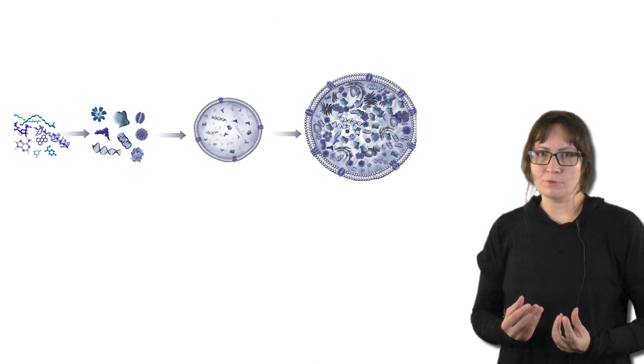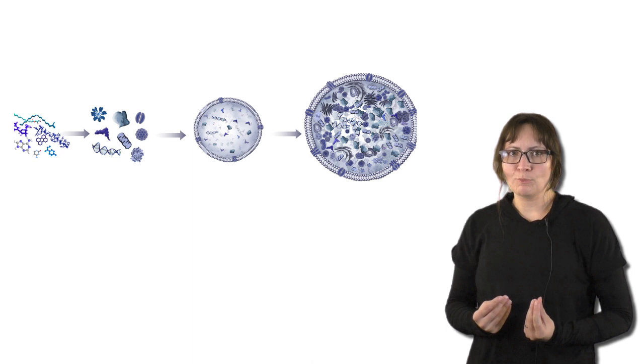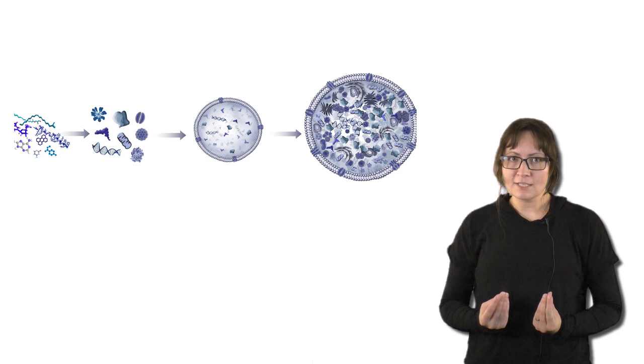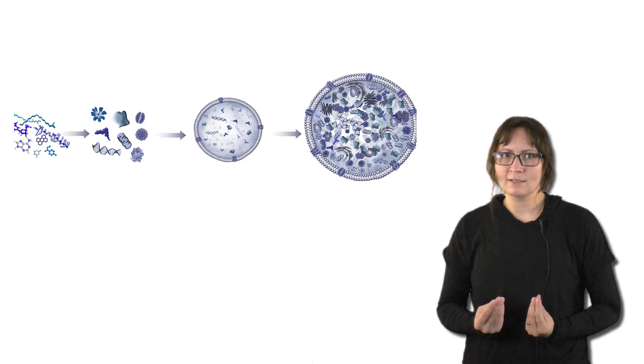When you imagine the way evolution went from the simplest building blocks to complex modern cells, at one point life went through the stage of a very simple cell. This was the last universal common ancestor of all organisms, LUCA.